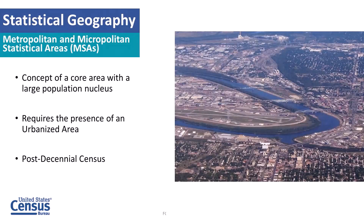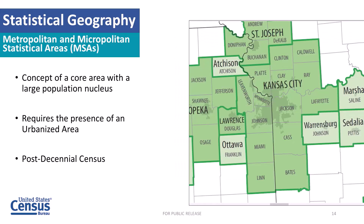Next are metropolitan and micropolitan statistical areas — we call those MSAs. The idea is to have a core area with a large population, usually over 50,000 people. For example, Kansas City has over 50,000 people. Surrounding that are micropolitan statistical areas, which generally have 10,000 to 15,000 people. These areas are dependent on decennial population, and the Office of Management and Budget — not the Census Bureau — delineates them after each 10-year census.